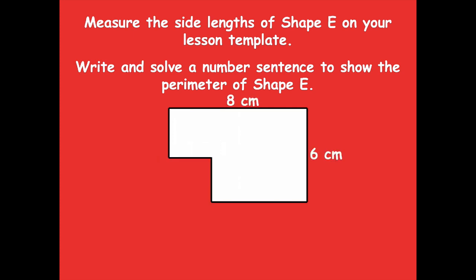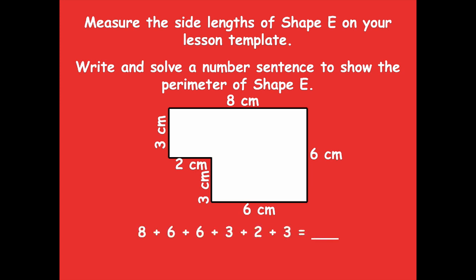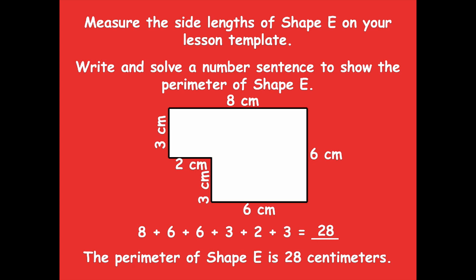Here are my measurements: eight centimeters, six centimeters, six centimeters, three centimeters. Don't forget to go up this little side right here — and also right here, this is two centimeters and three centimeters. We should all have the same measurements, so stop for a second and check. If they don't all match, pause the video and go back to re-measure. Now here is our number sentence to find the perimeter: add all of the sides to get 28. The perimeter of shape E is 28 centimeters.